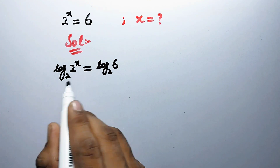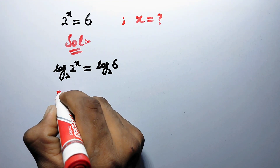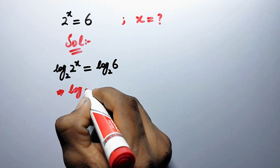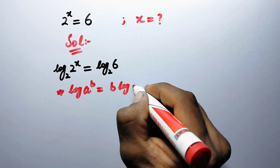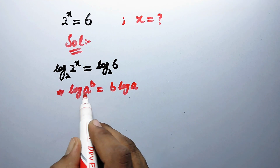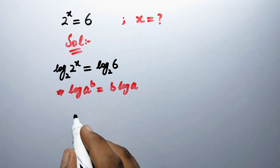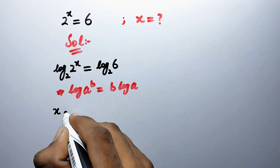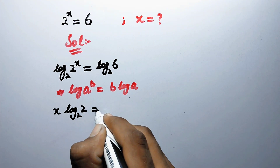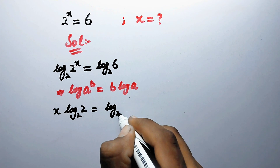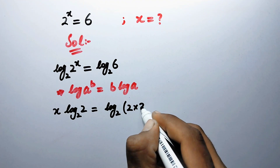Now we can apply a property of logarithms: log of a to the power b is equal to b times log of a. According to this property, the power comes before the log, so we write x times log to base 2 of 2, equal to log to base 2 of 6, and we can expand 6 as 2 times 3.